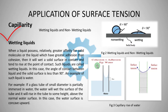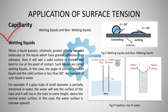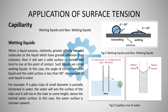Here we can see water. If we insert a glass tube of very small diameter, partially immersed in water, the water will wet the surface of the tube and it will rise to some height above the normal water surface. In this case, the water surface is concave upward — we can say this is a concave meniscus — and this is due to surface tension force. So in case of wetting liquid, adhesion is more than cohesion, causing capillary rise, and the angle of contact is less than 90 degrees or acute angle. This phenomenon is called capillary rise of water.